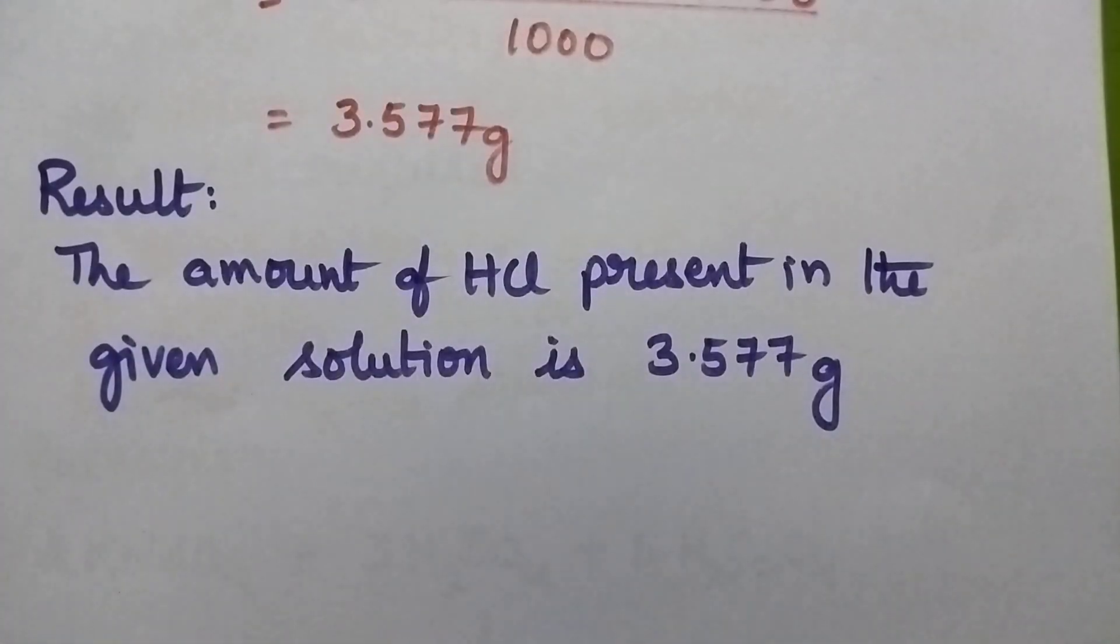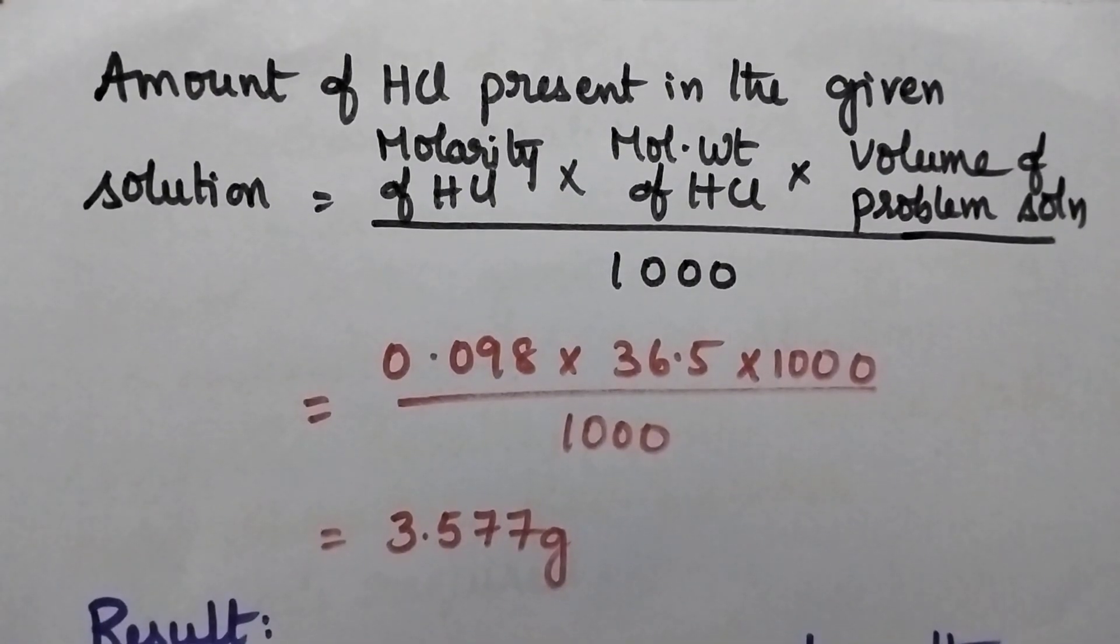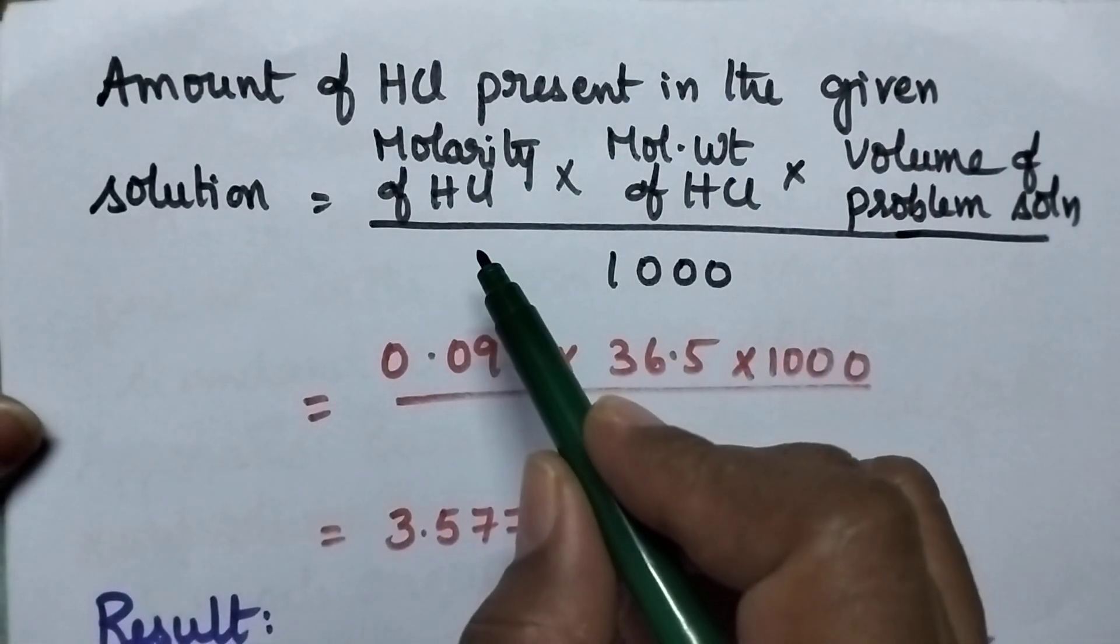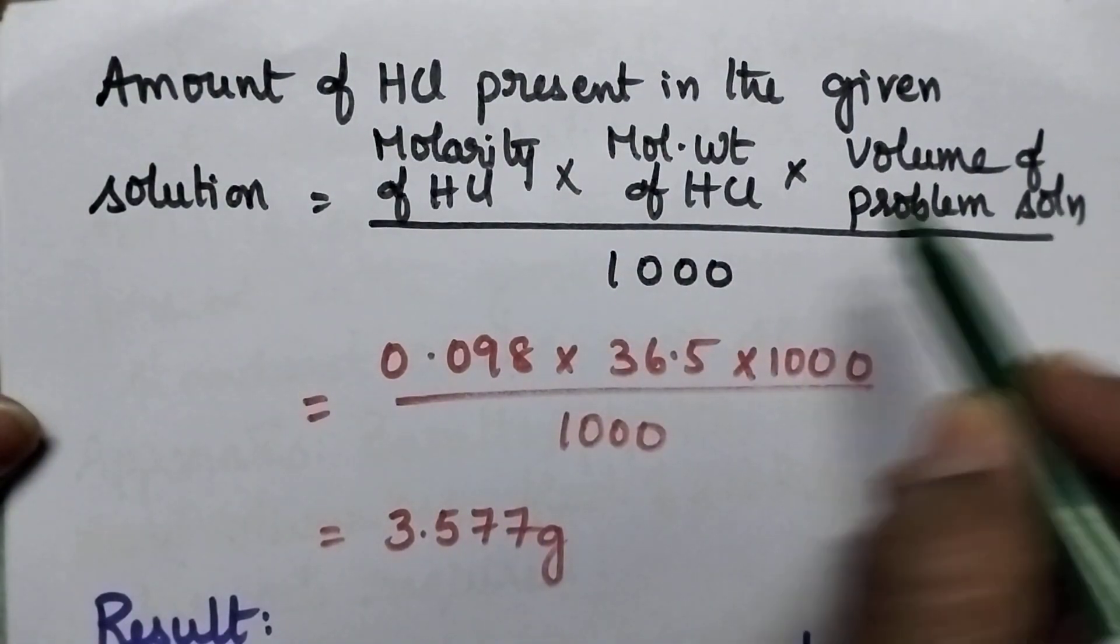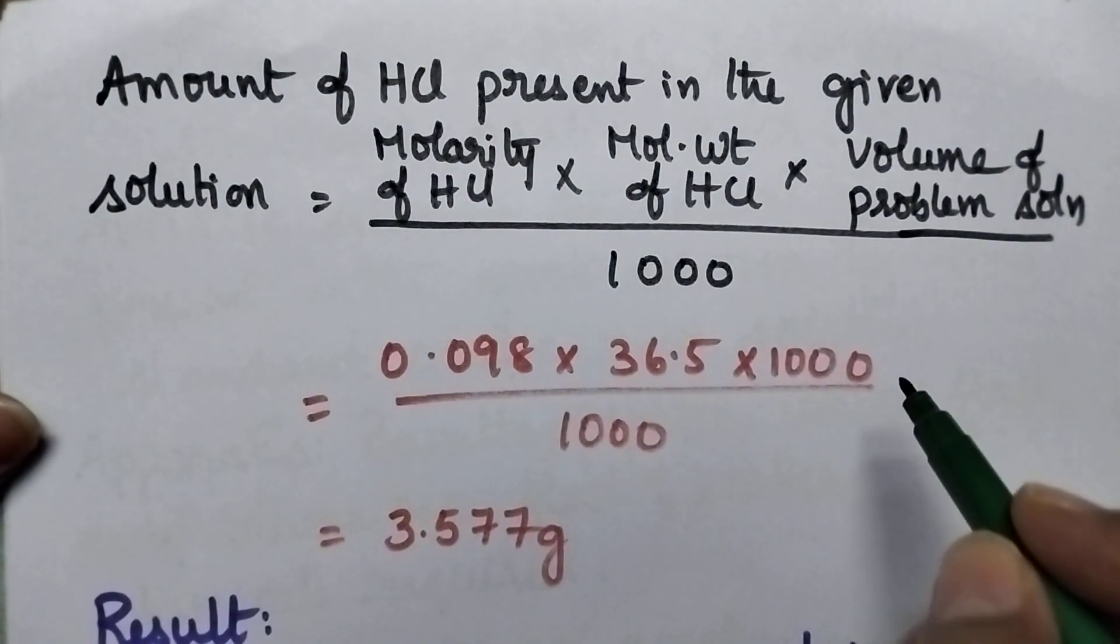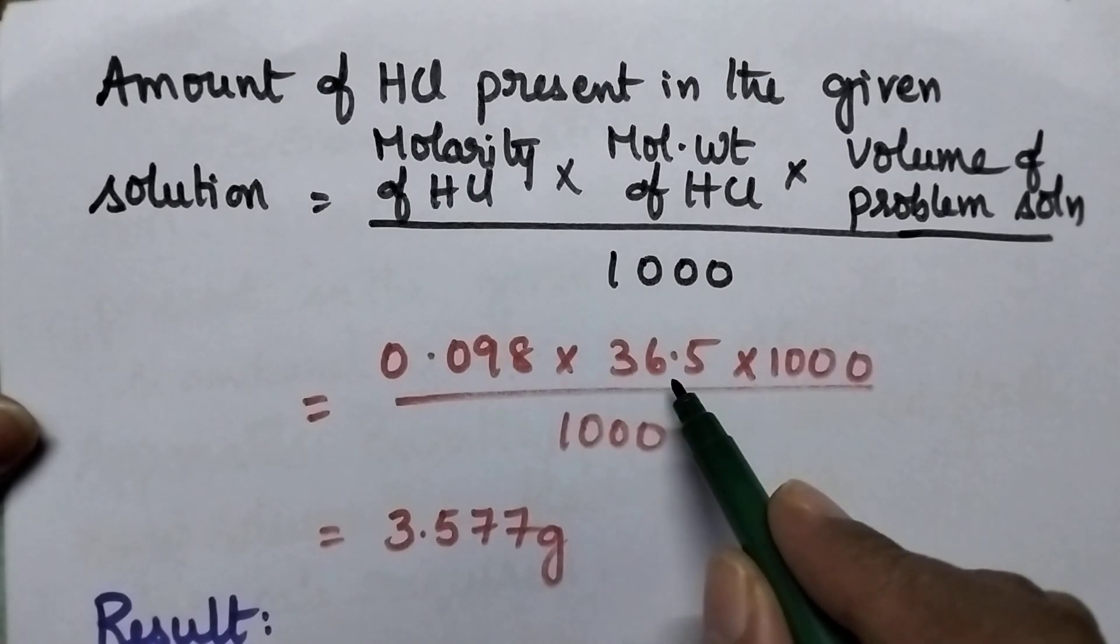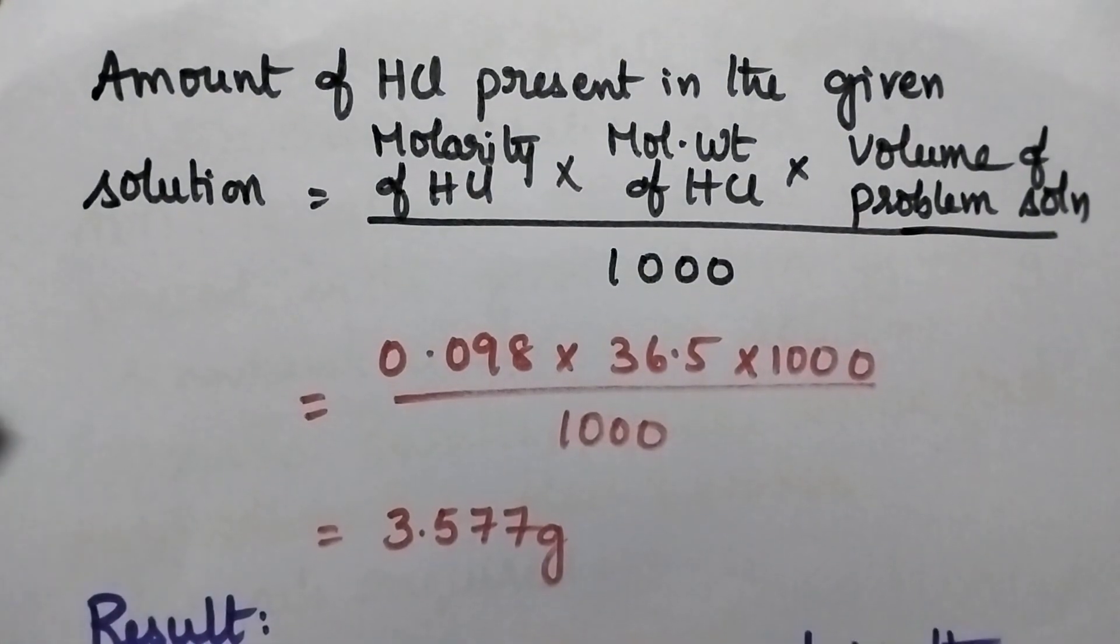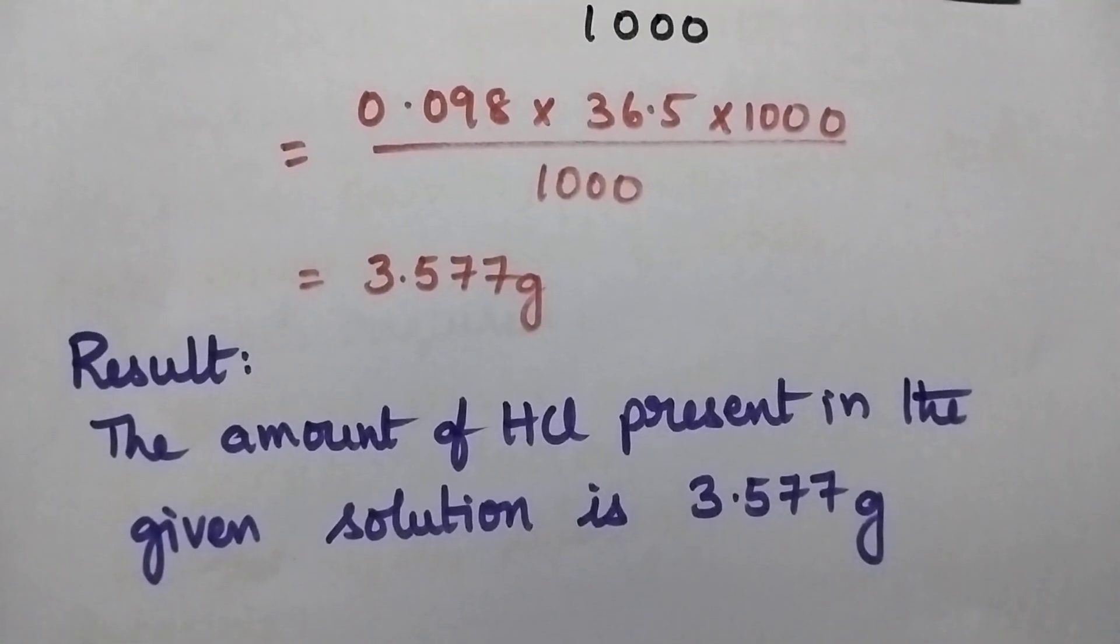The amount can be calculated by using the expression amount of the HCl present in the given solution is equal to molarity of HCl into molecular weight of HCl into volume of the problem solution divided by 1000. Here the volume of problem solution is 1000 and hence it is equal to 0.098 into 36.5 into 1000 by 1000 and finally it is equal to 3.577 gram.